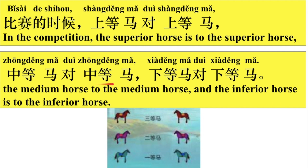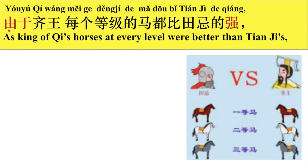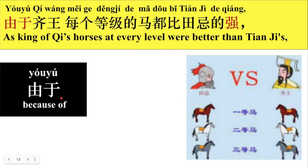比赛的时候，上等马对上等马，中等马对中等马。那这个对就是和谁比赛的意思。下等马和下等马比赛。由于骑王每个等级的马都比田纪的强。好，我们来看一下由于，由于就是因为。